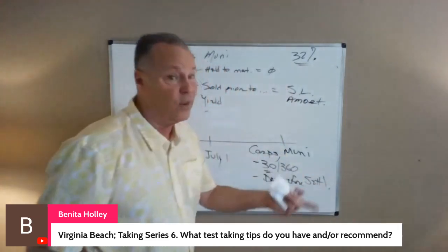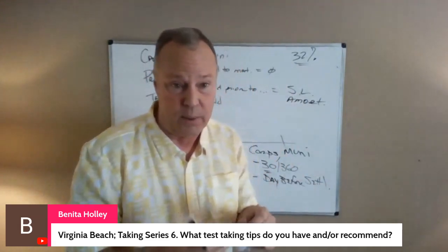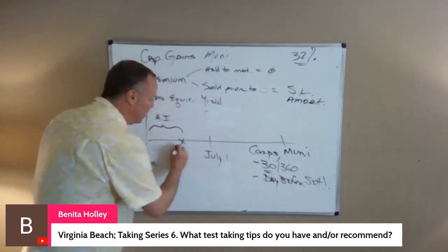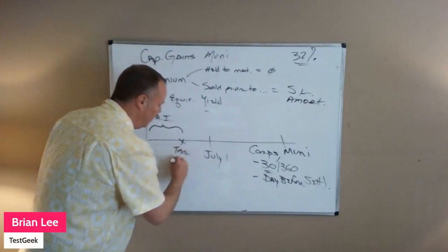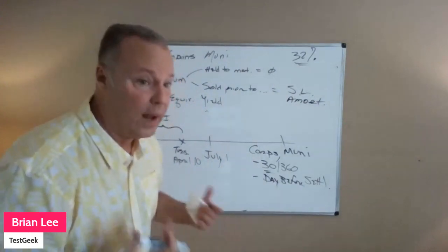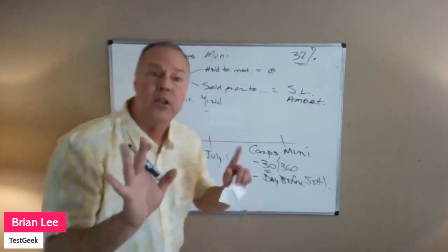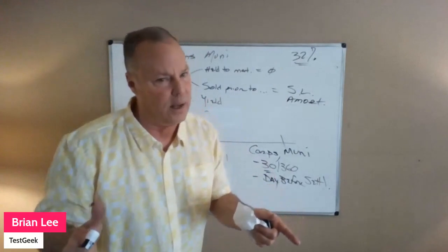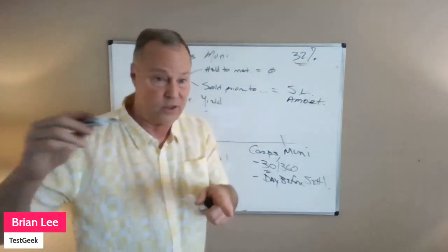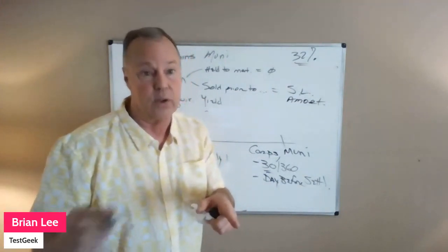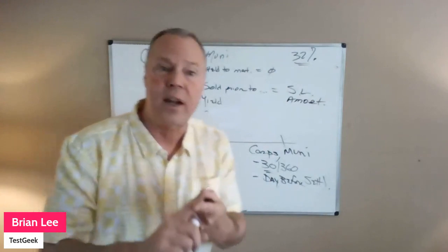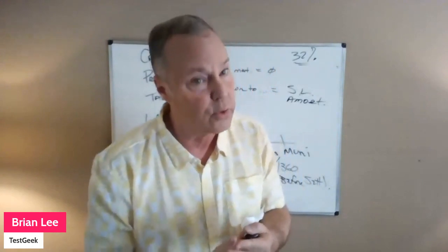You have to first calculate what the actual settlement day is. So if you trade on Tuesday, April 10th, settlement would be Thursday the 12th. Sometimes it carries over a weekend — be careful of that. If you trade on Thursday, it won't settle until Monday. However, you still get accrued interest through that Sunday. Settlement does not include weekends, but accrued interest does.